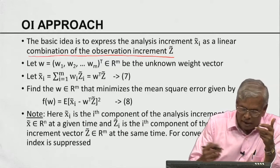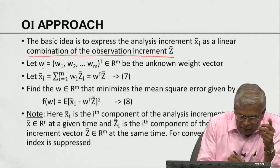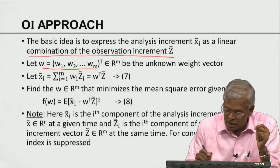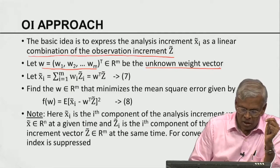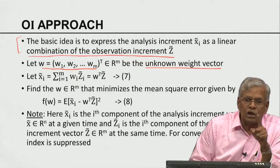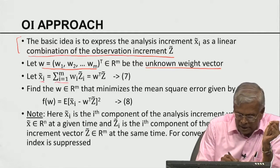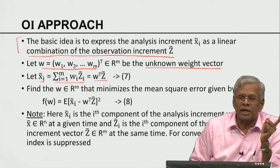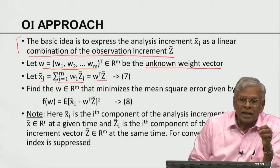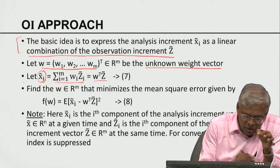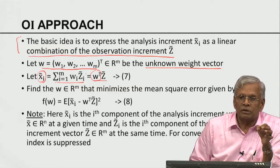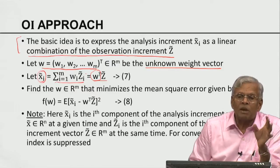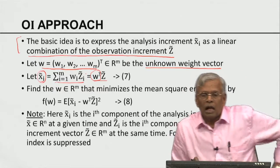If I am going to have a linear combination, I need to have the weights. Let W be the vector of weights. X-tilde will be optimal under the optimal choice of W. The whole problem now reduces to finding an optimal weight vector W. Optimal in what sense? Again, we come back to least squares. Both Kolmogorov and Wiener, independently in 1941, separated geographically, came up with very similar ideas.